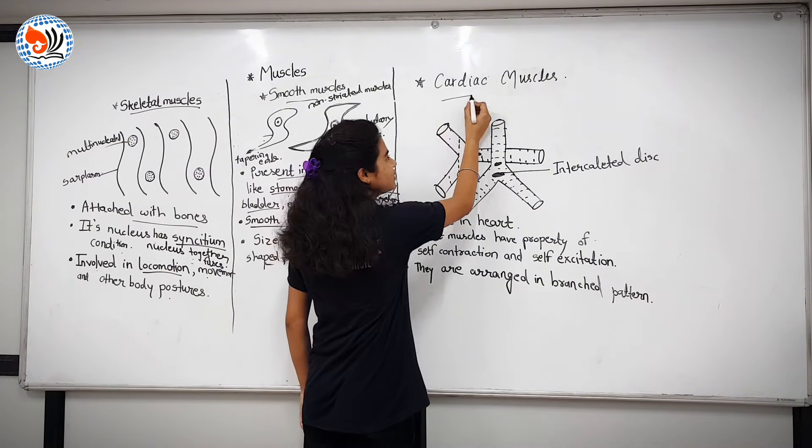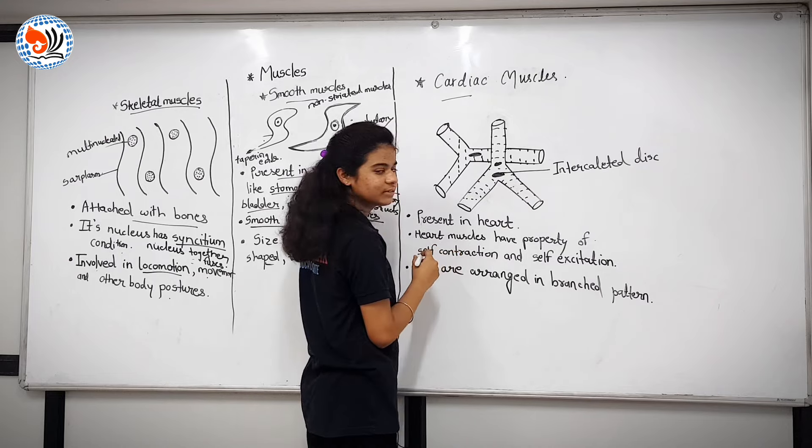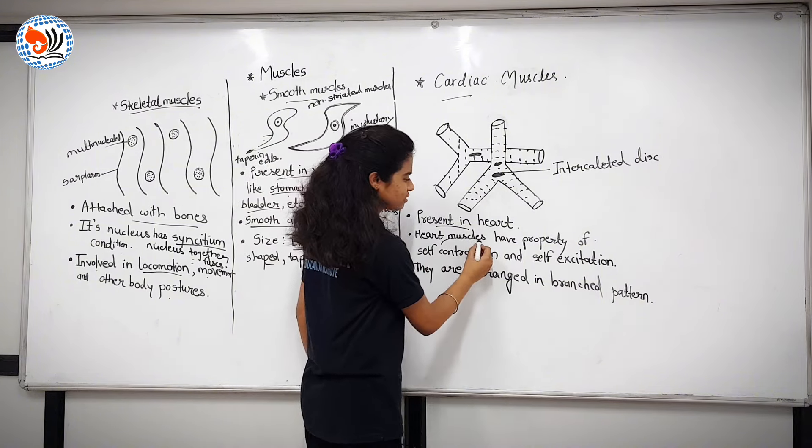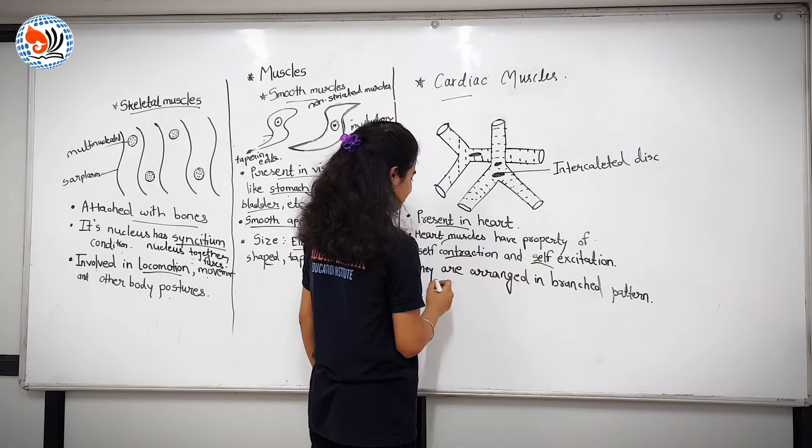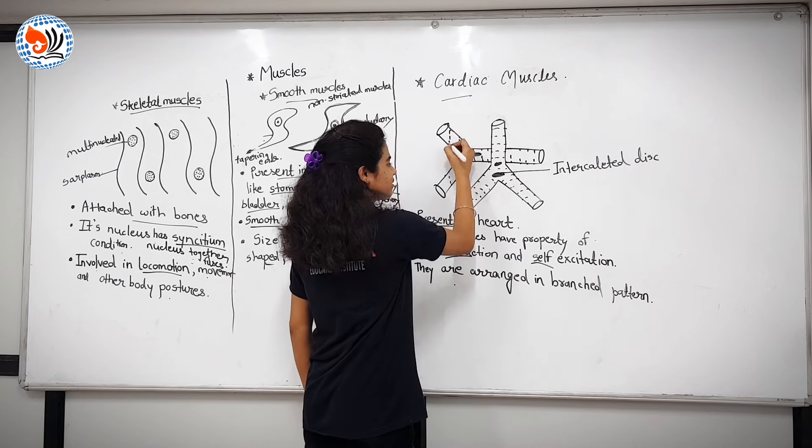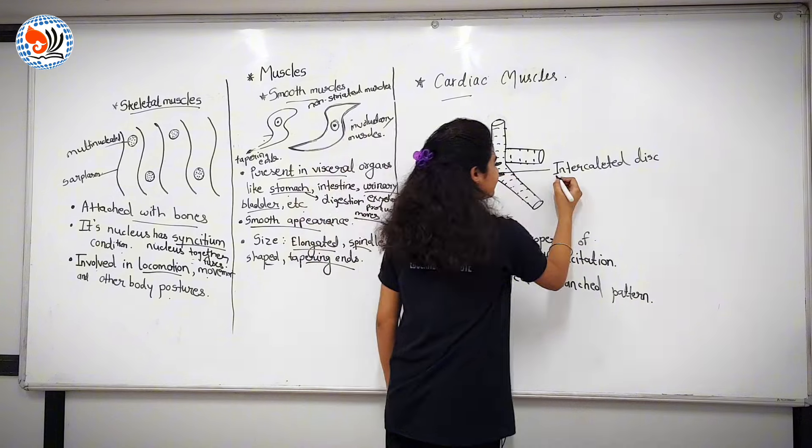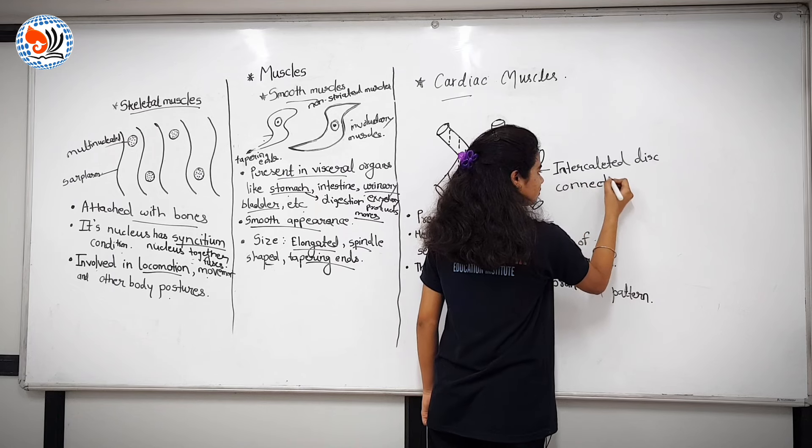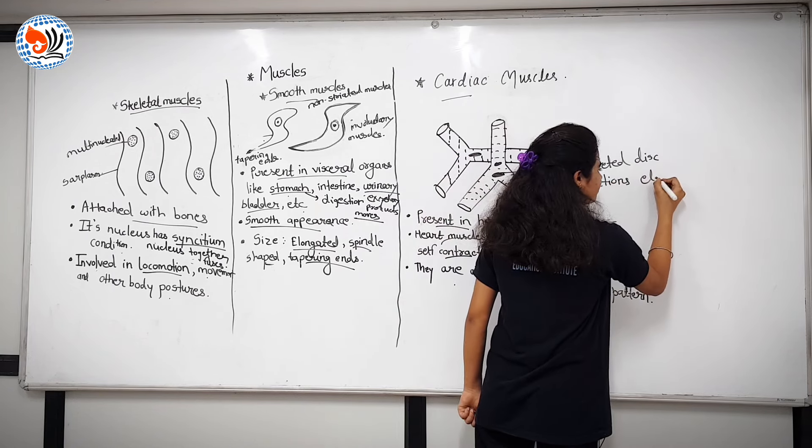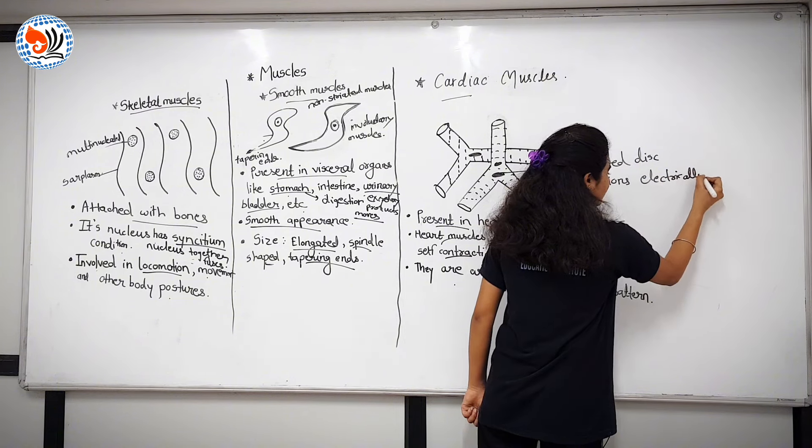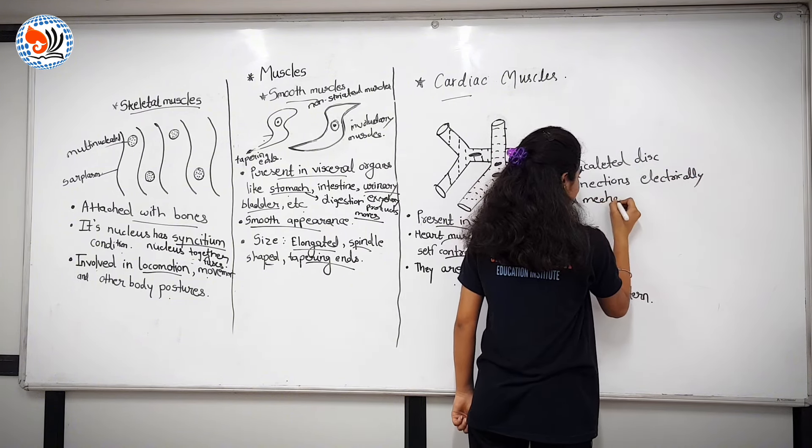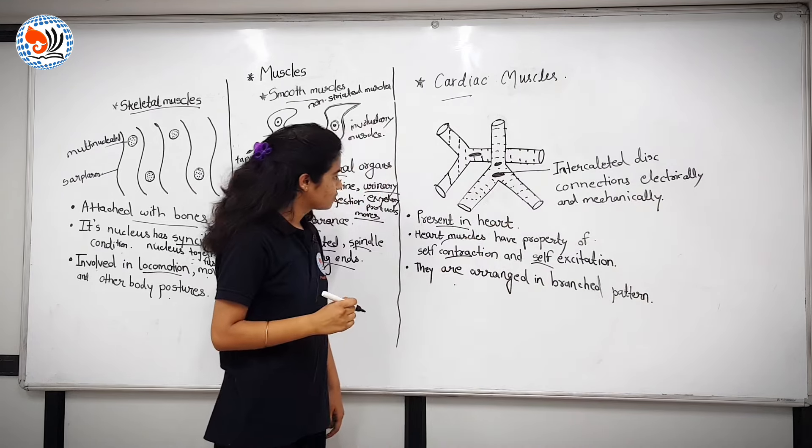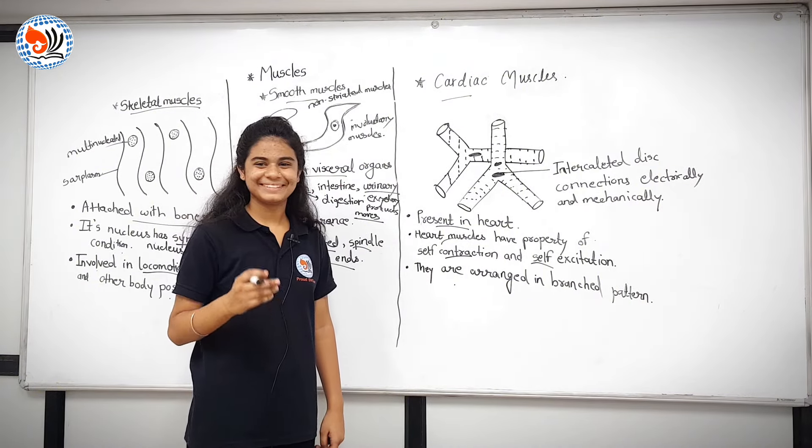Then third is cardiac muscles. Cardiac muscles are present in heart and they have the property of self contraction and self excitation. They are arranged in a branched pattern. They are interconnected electrically and mechanically.